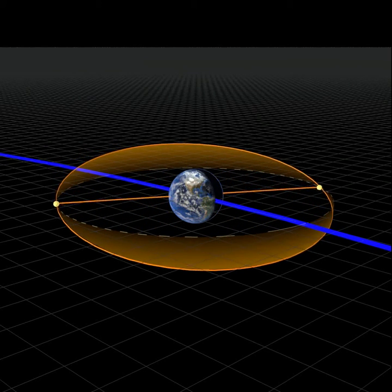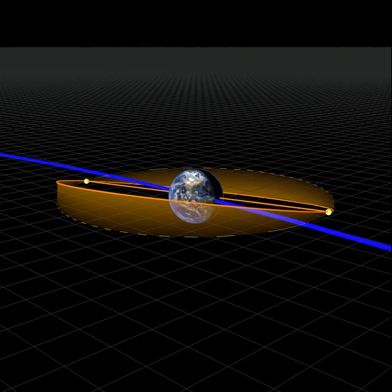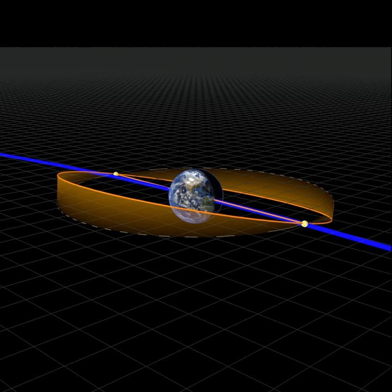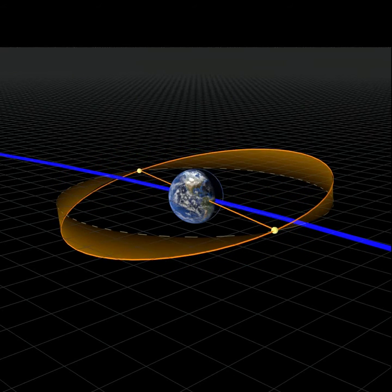The line you see going through the middle is where the moon's orbit intersects with the ecliptic. It's called the line of nodes, and that line spins because the moon's orbit is spinning. Not just the moon, its orbit is spinning.